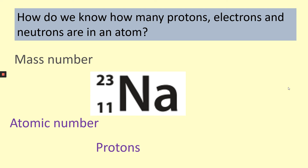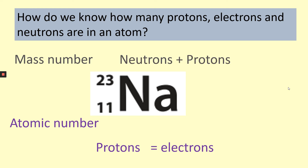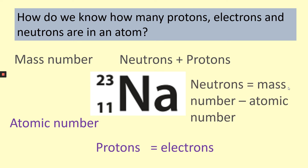The atomic number is also the number of electrons — this can actually change, but that is another topic. The overall charge on an atom is neutral because the number of protons is the same as the number of electrons, so the positive charge cancels the negative charge. The mass number gives us the total number of neutrons and protons. To calculate the number of neutrons, we take the atomic number away from the mass number. So for sodium, we have 11 protons, 11 electrons, and 12 neutrons — because 23 minus 11 is 12.